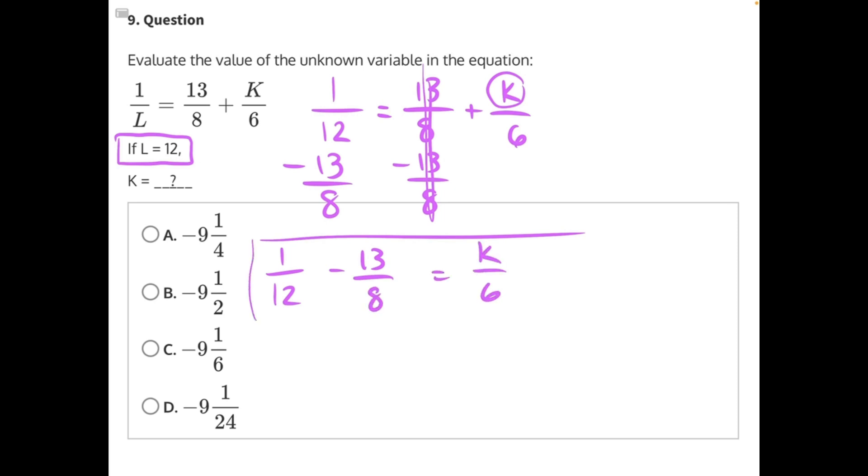Now we need to simplify this half of the equal sign before we can continue. To do that, we need to get common denominators. 12 and 8 both have a least common multiple of 24. 2 times 12 would give you 24, and 8 times 3 would give us 24. So if I multiply the numerator and denominators by both of those numbers, we will get equivalent fractions with like denominators.